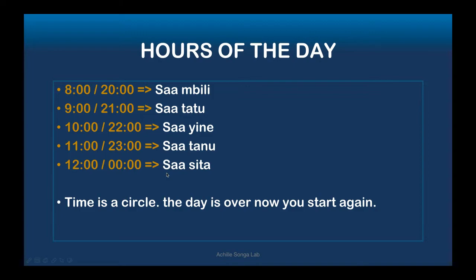The cycle of the day in Kinyarwanda goes: sasta, sasara, samanani, satatu, sakumi, sakumi na rimwe, sakumi na biri, samoya, sambiri, satatu, sane, satana, sasta again. That's the full circle. Now that you know this, it won't be hard for you anymore to tell time in Kinyarwanda.